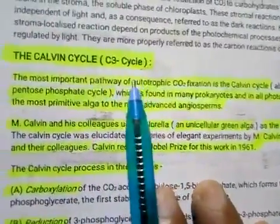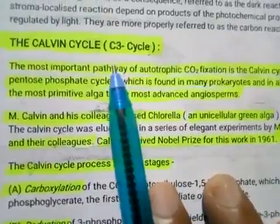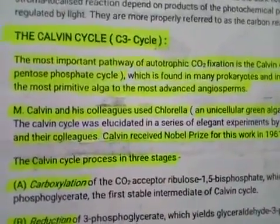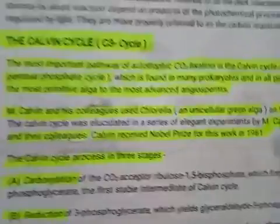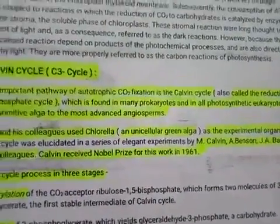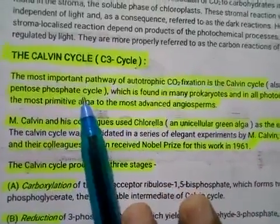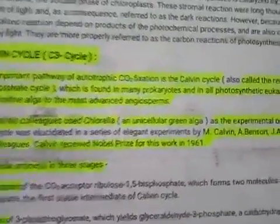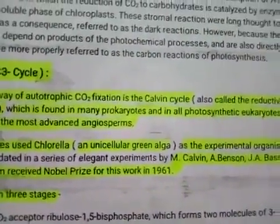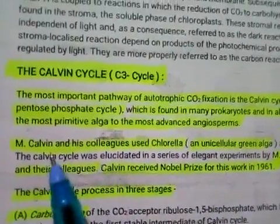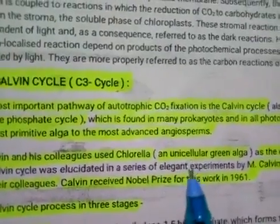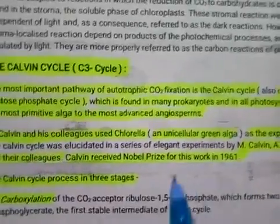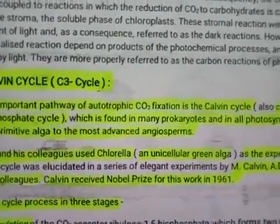The Calvin Cycle, also called the C3 Cycle, is the most important pathway of autotrophic carbon dioxide fixation. It is also known as the reductive pentose phosphate cycle, found in many prokaryotes and in all eukaryotic organisms and plants. Melvin Calvin and his colleagues used Chlorella, a single-cell alga, for their experimental work, and for this Calvin received the Nobel Prize in 1961.